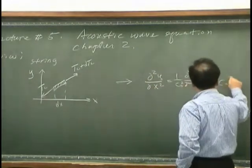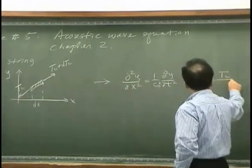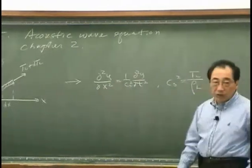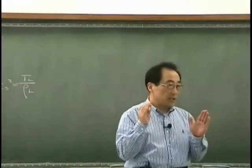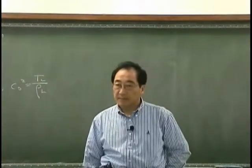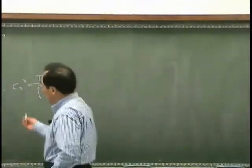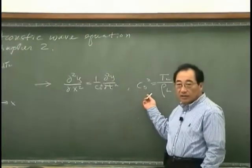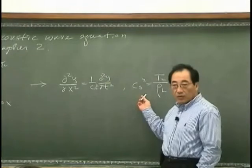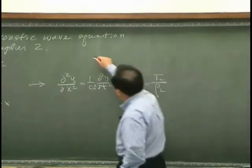Cs squared is the ratio between tension and the density per unit length. How we find this relation?